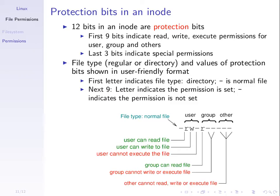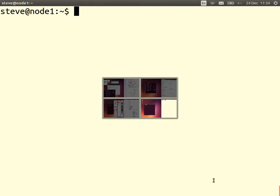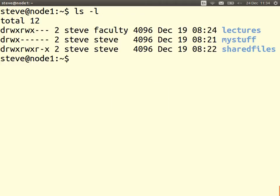In the inode there are 12 bits which are protection bits. The first 9 bits indicate the three permissions — read, write, or execute — for each of the three sets of users: the user owner, the group, and others. There are another 3 bits which specify some special permissions. On a Linux system we often see this information summarized in the output of ls and other programs.